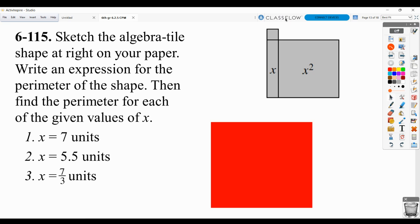The first thing they want you to do is to sketch this shape on your paper, write an expression for the perimeter of the shape, then find the perimeter for each of the given values of x. In terms of sketching this, you could put it in your notebook and then take a picture of it, or you could use your e-tool and screenshot it.